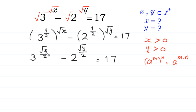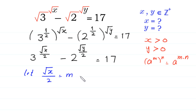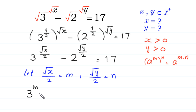Now suppose that square root of x over 2 is equal to m, and square root of y over 2 is equal to n. We substitute m and n in this equation, and the equation becomes 3 to the power m minus 2 to the power n is equal to 17.